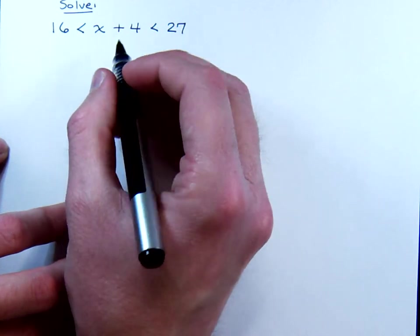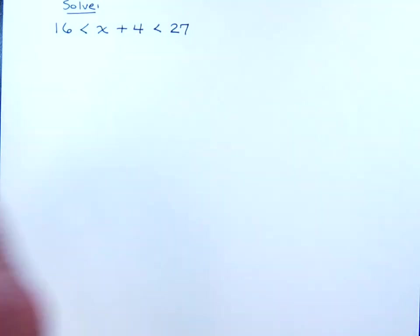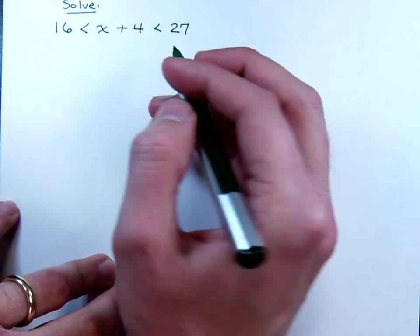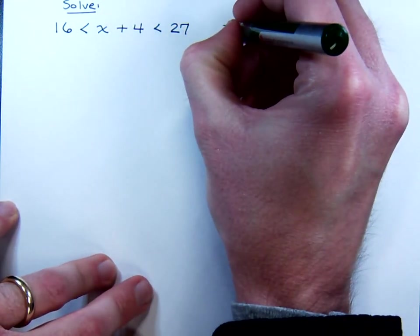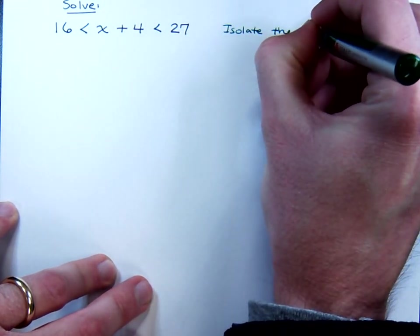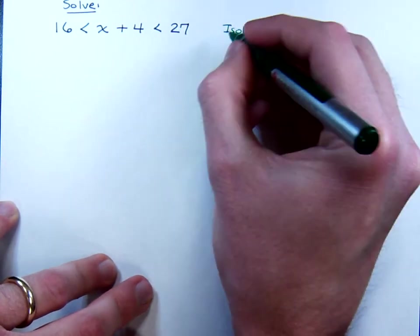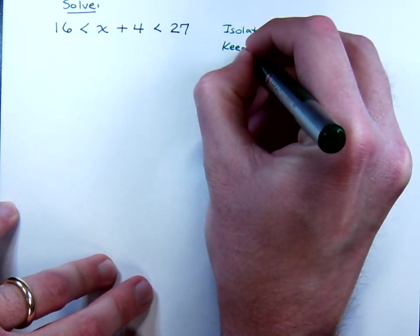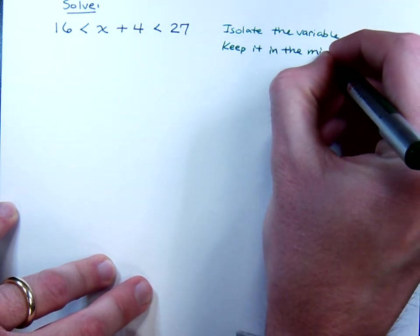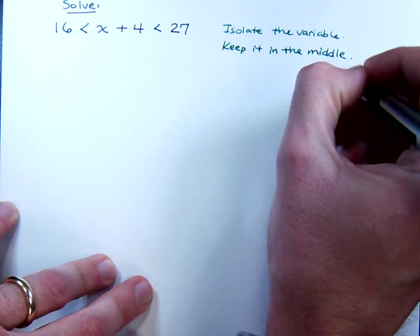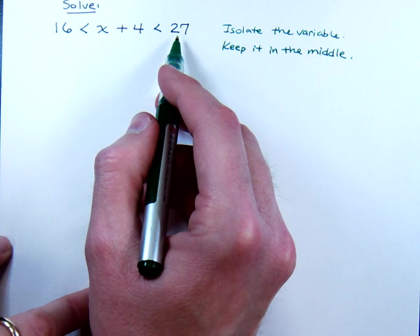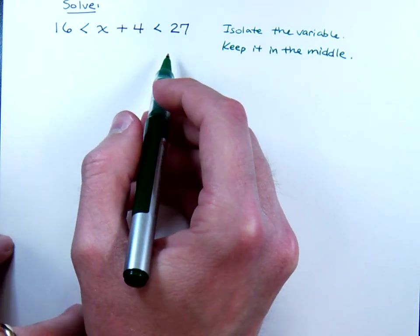Now, one of the key things we need to remember about these guys when we have a compound inequality: you've got two inequalities here in this string. You need to isolate the variable, and to do that, you want to keep it in the middle. Do not try to move this x on the outside. You're going to get in trouble. Trust me on this.